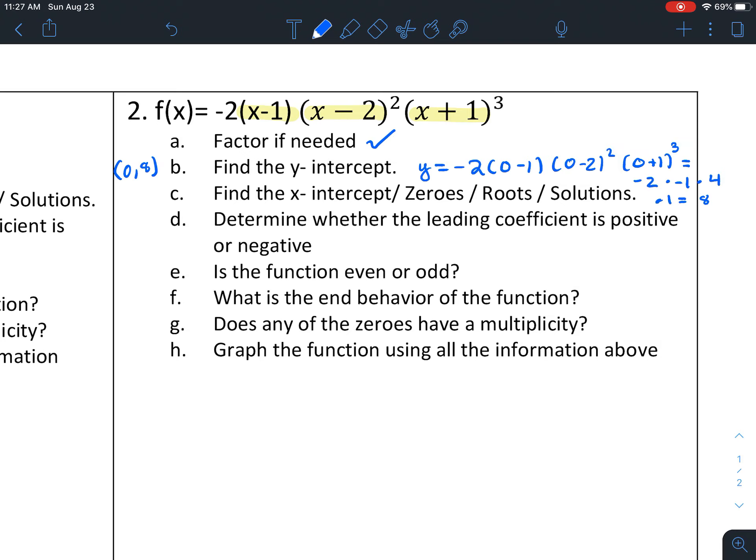So our y-intercept is (0, 8). It's going to be really important when you graph at the end and you see how the behaviors work out. It's easy to check if you did it correctly or not. If I check my math real quick: negative 2 times negative 1 is 2, 2 times 4 is 8, and 8 times 1 is still 8. So (0, 8) looks good.